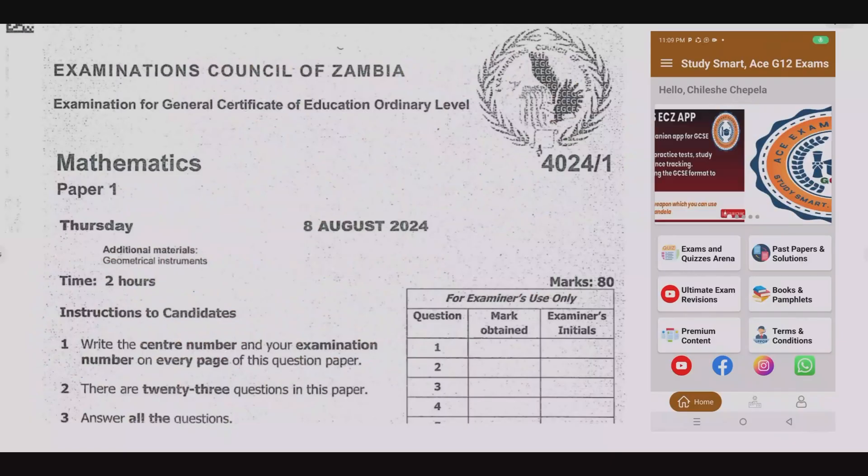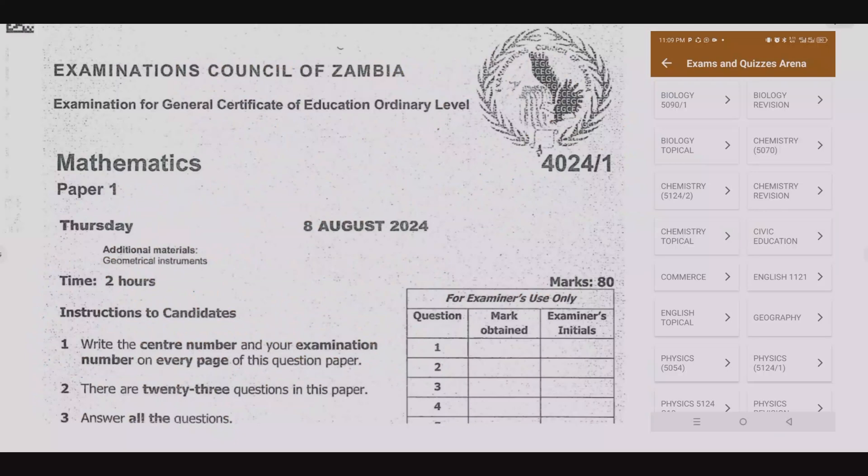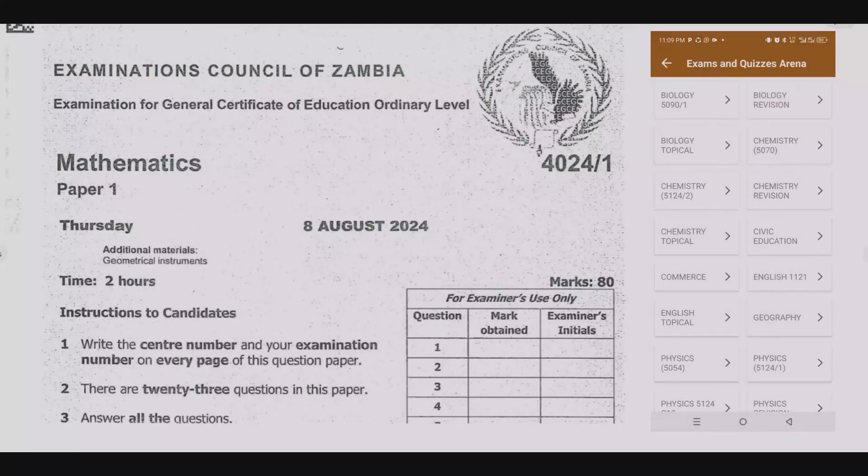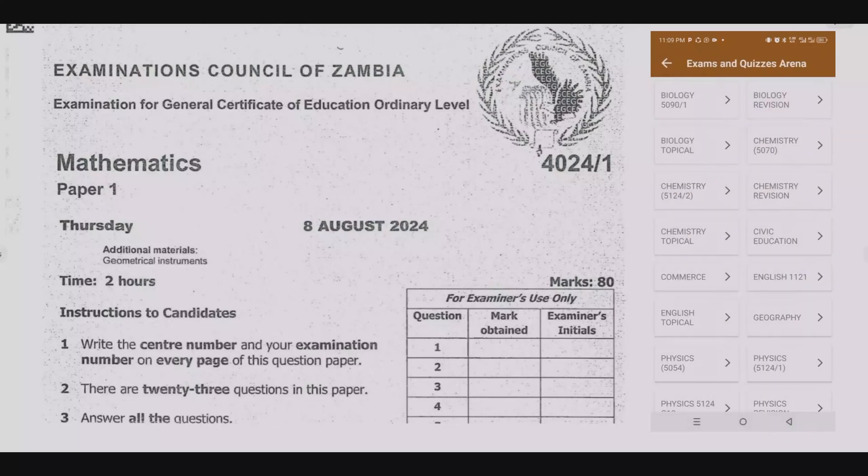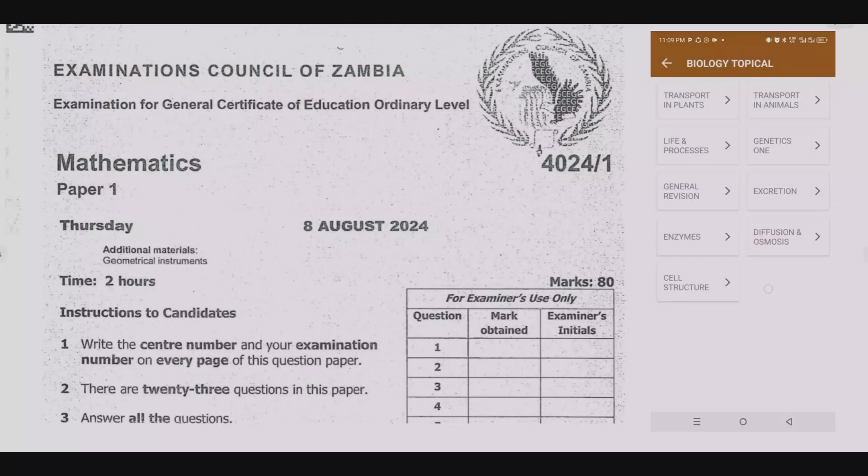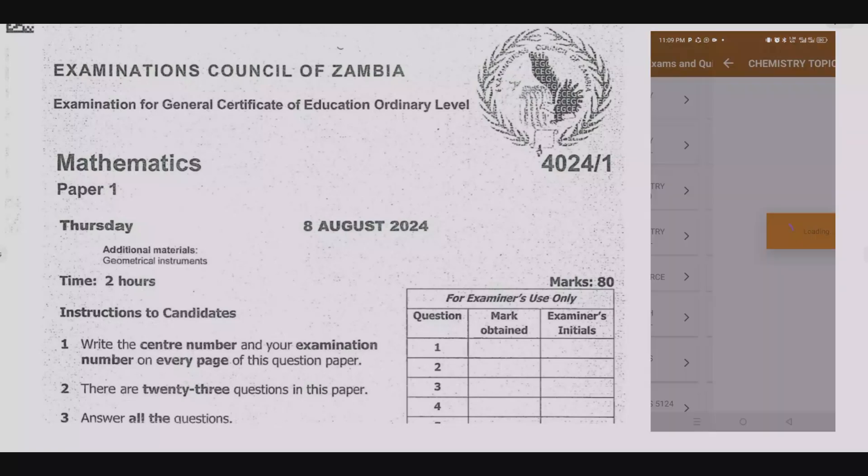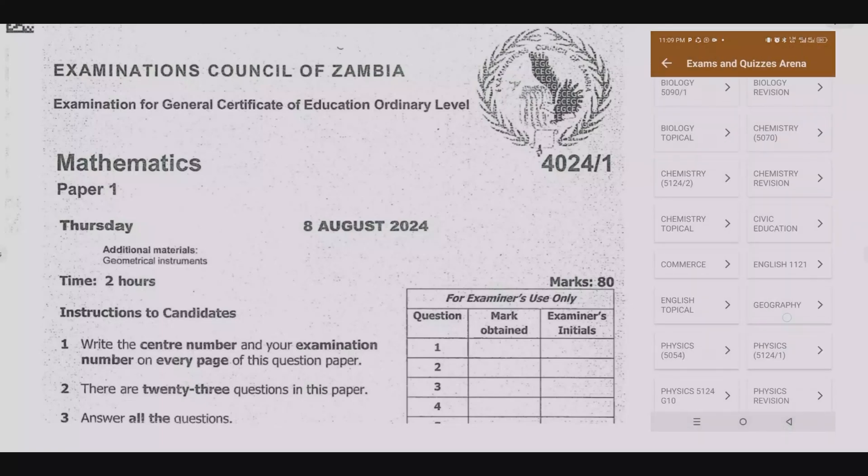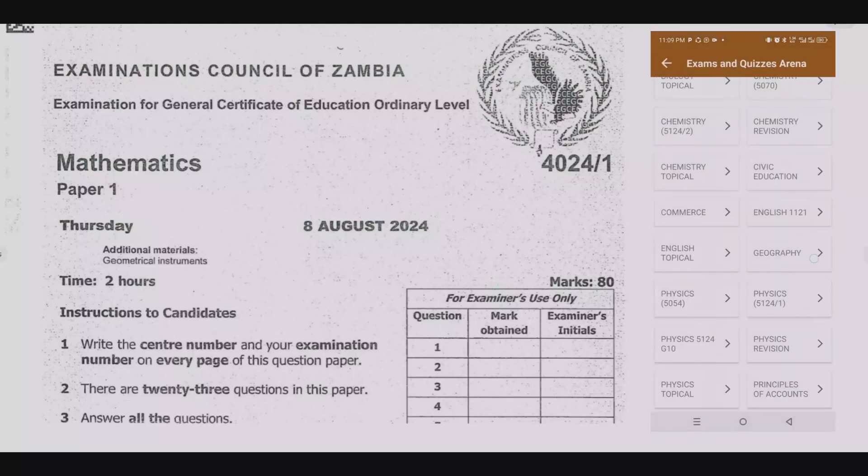Welcome viewers to another episode in a series where we continue looking at the August 2024 mathematics paper. If you haven't seen the other episodes, please check out our YouTube channel or download the companion app that you're seeing on the right side of your screen. In this app, you're going to find a lot of helpful materials including quizzes based on topical exam past papers and over 10,000 questions with instant solutions and detailed explanations.